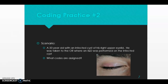In our second coding practice, we have a 33-year-old with an infected cyst of his right upper eyelid. He was taken to the OR where an incision and drainage (I&D) was performed on the infected cyst. In this scenario we have two things: a diagnosis — the cyst — and a procedure — the I&D. Let's start by going to our CM code book and looking up the main term, which is 'cyst.'